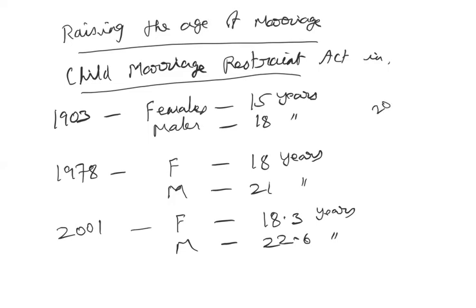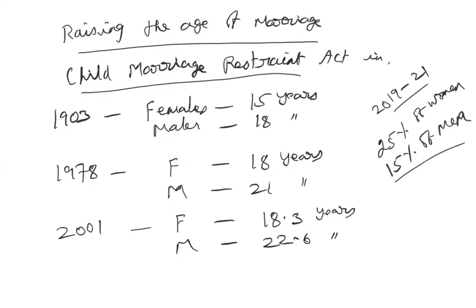However, as per a survey conducted between 2019–21, still 25% of women and around 15% of men in the country married before the legal age announced by the government. Even though measures are being undertaken, there is not enough cooperation from citizens. Social factors are very difficult to change — it will take a long time for people to change their attitudes, and we still have a long way to go.